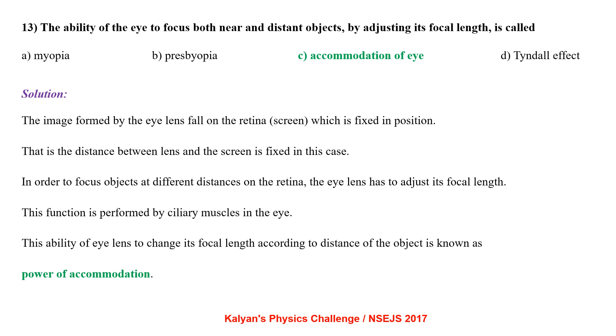The ability of eye to focus both near and distant objects by adjusting its focal length is called. The image found by the eye lens falls on the retina i.e. screen which is fixed in position. That is the distance between the lens and the screen is fixed in this case. In order to focus objects at different distances on the retina, the eye lens has to adjust its focal length. This function is performed by ciliary muscles in the eye. The ability of eye lens to change its focal length according to the distance of the object is known as power of accommodation.